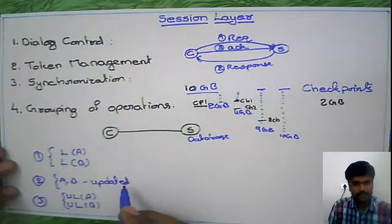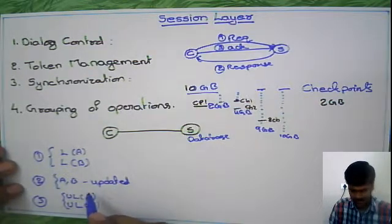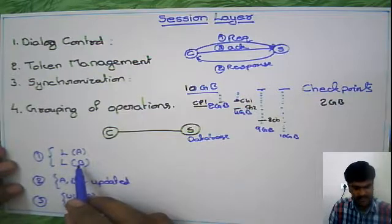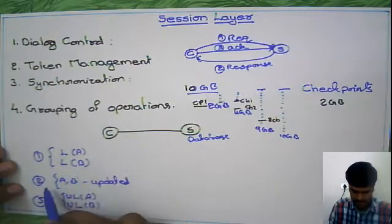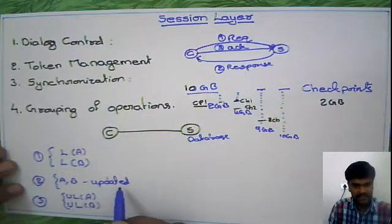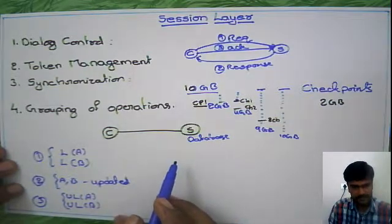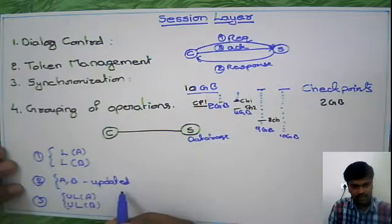If it is done properly, no problem. But what is the problem here is, after sending the first packet you got the lock on A and B, then after sending this A and B is updated there, now assume that you lost the connection.